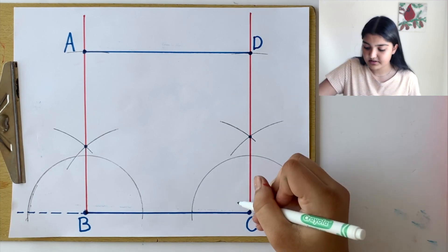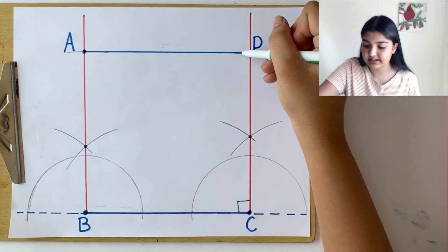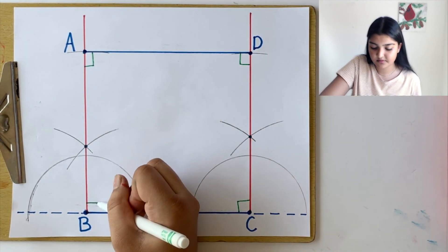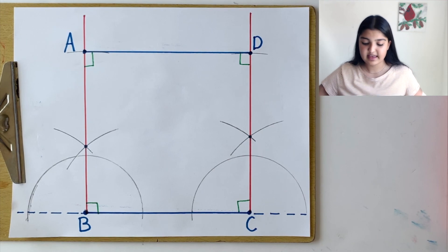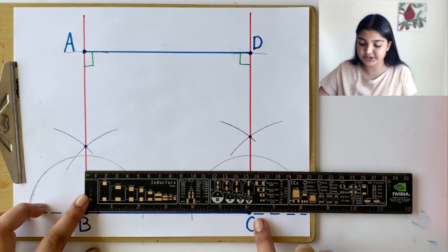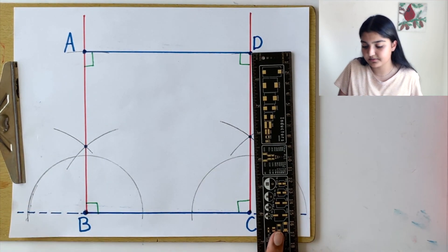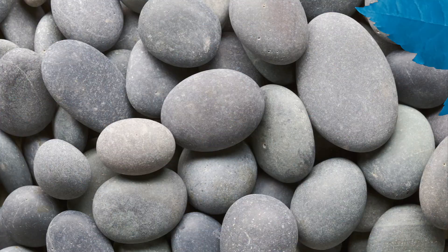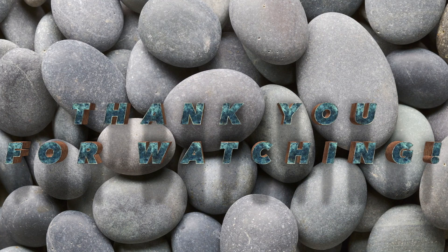In square ABCD, all the angles measure 90 degrees, and all sides of the square are equal, as they all measure six inches in length. Thank you — we'll see you next time.